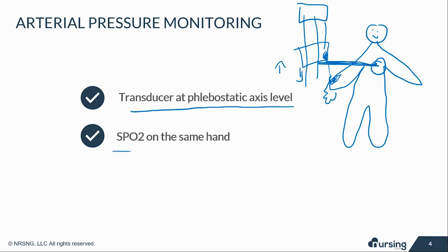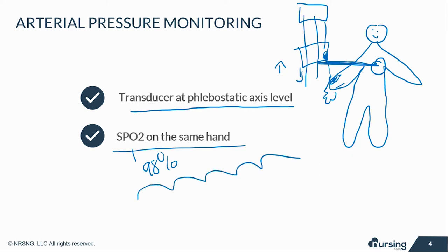Another thing you must ensure is that there is an SpO2 on the same hand as the A-line. If the A-line is in the right radial artery, place the SpO2 on the index finger or thumb of that hand. This confirms that the ulnar artery is still providing perfusion to the hand. You'll see a saturation of around 98% and a waveform, which tells you the ulnar artery is not occluded and the hand is still getting blood flow.